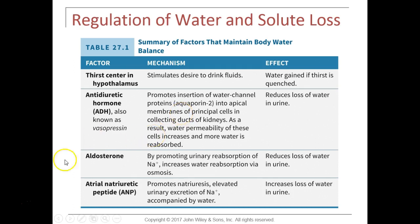Aldosterone is produced by the zona glomerulosa of the adrenal cortex. It has two major stimulations: angiotensin 2 stimulates the glomerulosa cells to release aldosterone, and high levels of potassium ions, called hyperkalemia, also stimulate aldosterone release. Aldosterone targets the kidneys at the distal convoluted tubule and collecting duct, promoting reabsorption of more sodium.